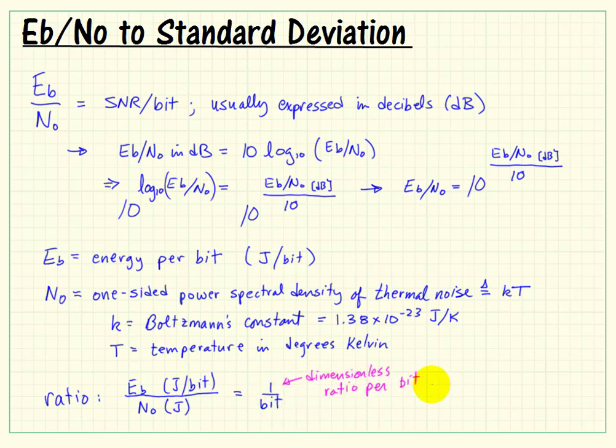So again, signal-to-noise ratio is a dimensionless ratio, so that's why this ratio is specifically called signal-to-noise ratio per bit. And generally, we look for larger values of ebno as being better, because that corresponds to a higher signal-to-noise ratio. Better signal quality, also it could be expressed as lower noise.